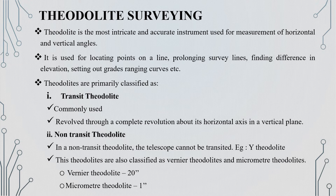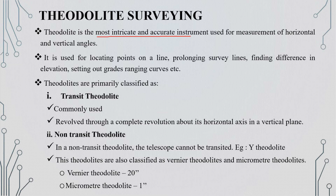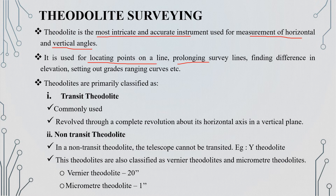In this video, we will learn how to use the main height instrument — the theodolite — which is the most intricate and accurate instrument. It can be used for horizontal measurements with vertical angles. We will locate a line at the top.